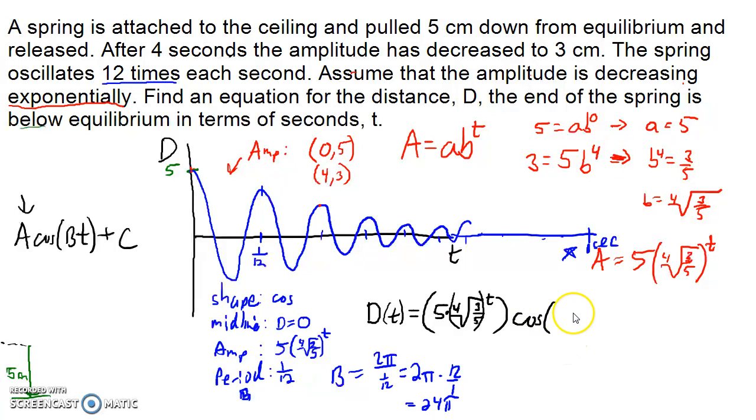So the function, 5 times the fourth root of 3/5 to the t, is going to be, maybe I should use parentheses here instead. All of this is my amplitude. The amplitude multiplies the cosine function. b is 24π. Don't forget the variable t. Plus the midline, in this case the midline is 0, so we don't need to add anything on the end here. And there is our final answer. There is an equation for the distance the end of the spring is below equilibrium in terms of time.